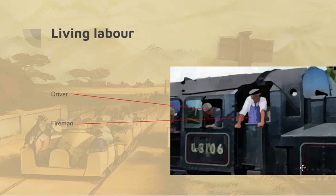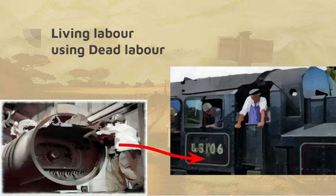What does he mean by the living-to-dead labour ratio? Here's a train with a driver and a fireman — they are carrying out living labour, human beings, what Marx calls variable capital when employed by a capitalist. On the other hand, they're using dead labour: the locomotive. That locomotive was built by workers; labour went into building it, but that labour is dead — it occurred in the past and is now being utilised by living labour.